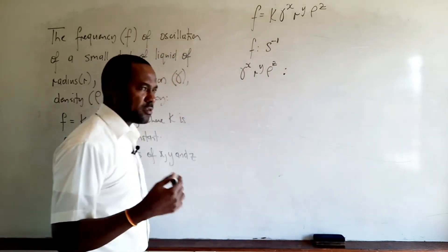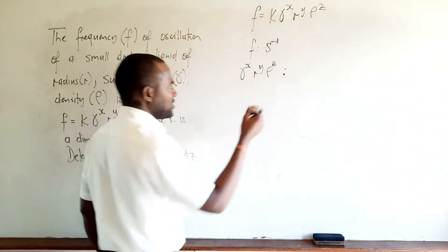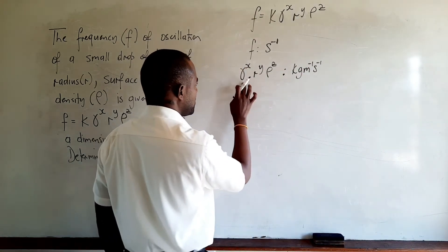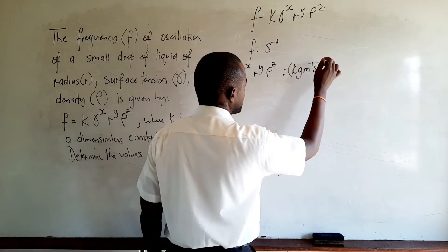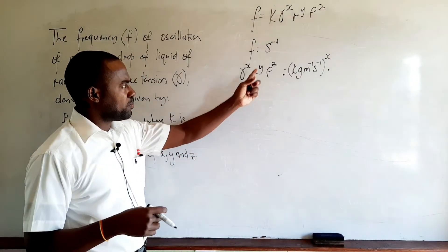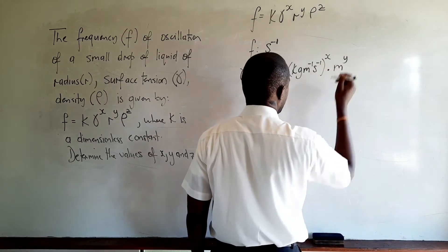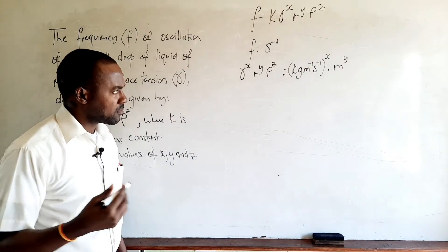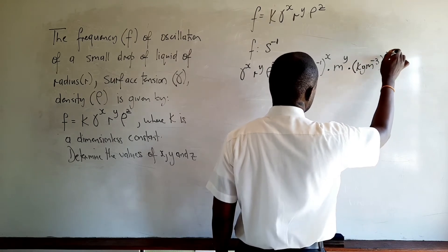Gamma represents surface tension. The base units of surface tension are kilogram per meter per second, and this is raised to the power of x. That is multiplied by r to the power of y, and the unit of radius is the meter, so we have times m to the power of y. Then density is raised to the power of z. The SI unit of density is kilogram per meter cube, and therefore we raise kilogram per meter cube to the power of z.